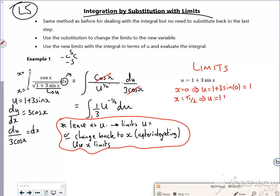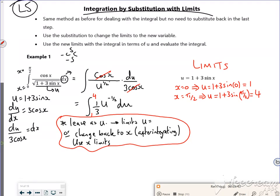When x is pi by 2, u will be 1 plus 3 sine of pi by 2. Well, sine of pi by 2 is 1, so 3 lots of sine pi by 2 is 3. Add the 1 gives us 4. So my limits are between 1 and 4. What I could have done is integrated it and then switched the u back out.